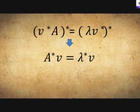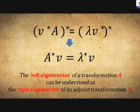This expression just defines the right eigenvector of A star. Therefore, the left eigenvector of a transformation A can be understood as the right eigenvector of its adjoint transformation A star.